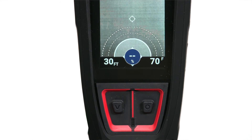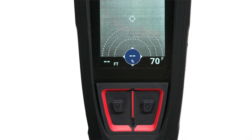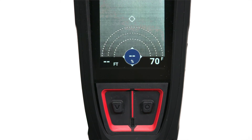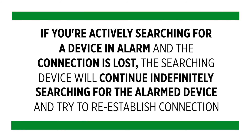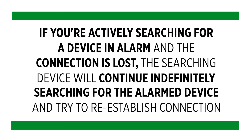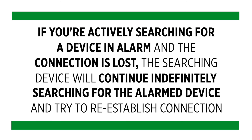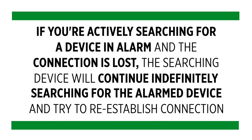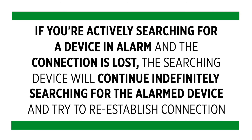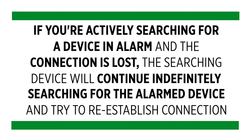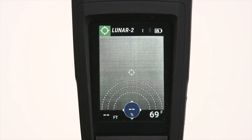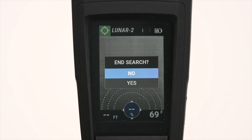As a note, when the numerical indicators show dashes instead of a number and no arcs are present, the signal to the device in alarm is unavailable or has been lost. If you're actively searching for a device in alarm and the connection is lost, the searching device will continue indefinitely searching for the alarm device and try to reestablish a connection. After one minute, you'll be prompted as to whether you want to continue or stop the search.